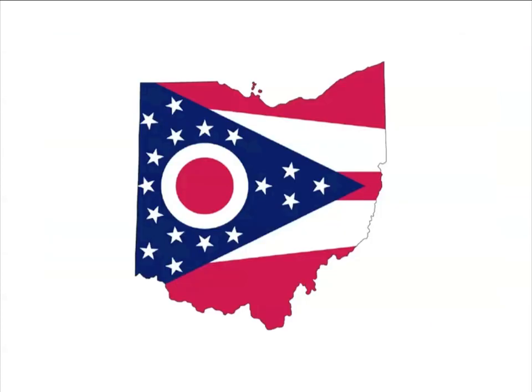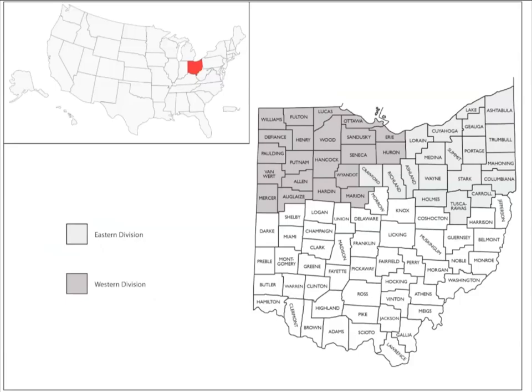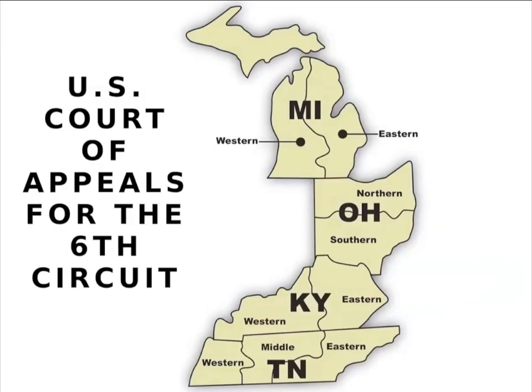The state of Ohio contains two federal district courts and a state court system made up of six branches. On the federal level, the state contains two U.S. district courts, the northern and southern districts of Ohio, as well as their corresponding bankruptcy courts. These are all under the jurisdiction of the U.S. Court of Appeals for the Sixth Circuit.